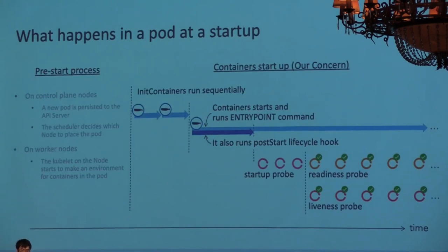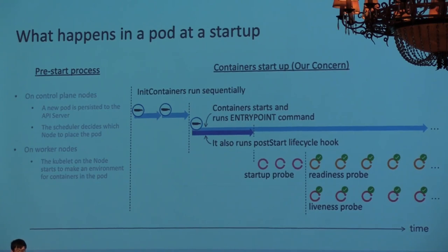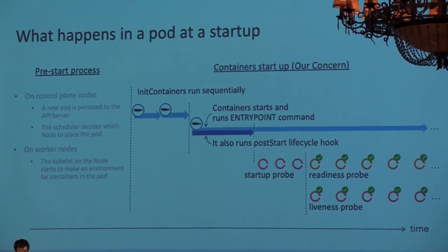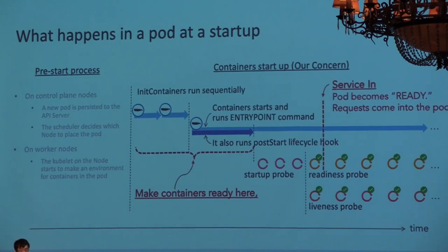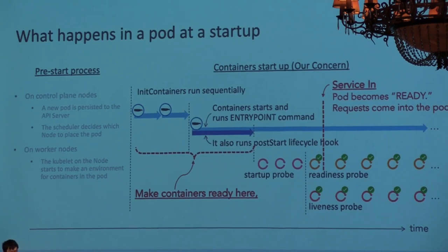For Java applications, you may want to reserve initial heap memory or perform warm-up to ensure the best performance. To understand how to prepare a Kubernetes pod, we need to know what happens when it is launched. The first step is to run init containers, executed sequentially if multiple exist. After that, the main container is started and the post-start lifecycle hook is executed at the same time. When the post-start hook finishes, the three kinds of probes start. After the readiness probe succeeds, the pod is determined to be ready and requests are sent to it. Therefore, we can use init containers and post-start lifecycle hooks for the preparation of containers.